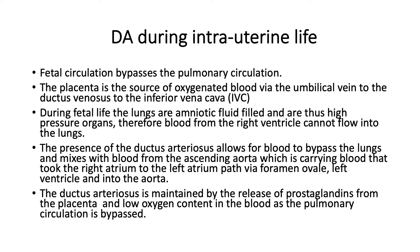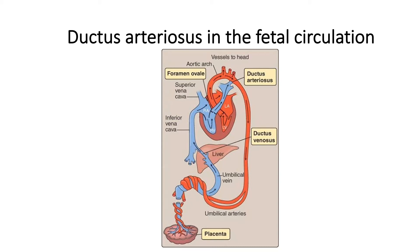Just a recap of what happens during intrauterine life. The fetal circulation bypasses the pulmonary circulation. The placenta is the main source of oxygenated blood, and blood flows from the placenta to the umbilical vein, to the ductus venosus, to the superior and inferior vena cava into the right atrium. From there it either flows directly into the left atrium via the foramen ovale and then into the aorta, or into the right ventricle and into the pulmonary artery. In the pulmonary artery, the ductus arteriosus forms a communication between the pulmonary artery and the aorta, allowing oxygenated blood to be delivered to the rest of fetal systemic circulation.